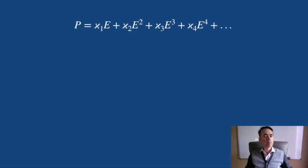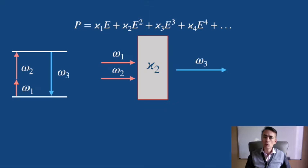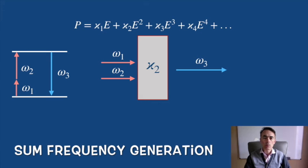We can also have sum frequency generation, where two photons of different frequencies can be combined in the non-linear medium to produce a third photon whose frequency is the sum of the incident ones.